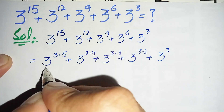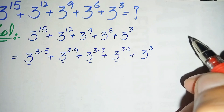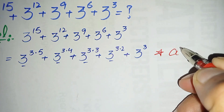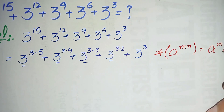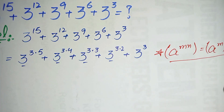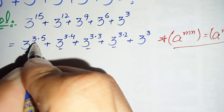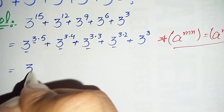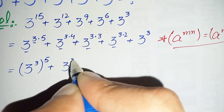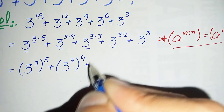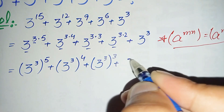In the next step, we will use an exponential math property. The property is: a to the power m times n can also be written as (a to the power m) to the power n. Using this property, the equation becomes: (3 to the power 3) to the power 5, plus (3 to the power 3) to the power 4, plus (3 to the power 3) to the power 3, plus (3 to the power 3) to the power 2.